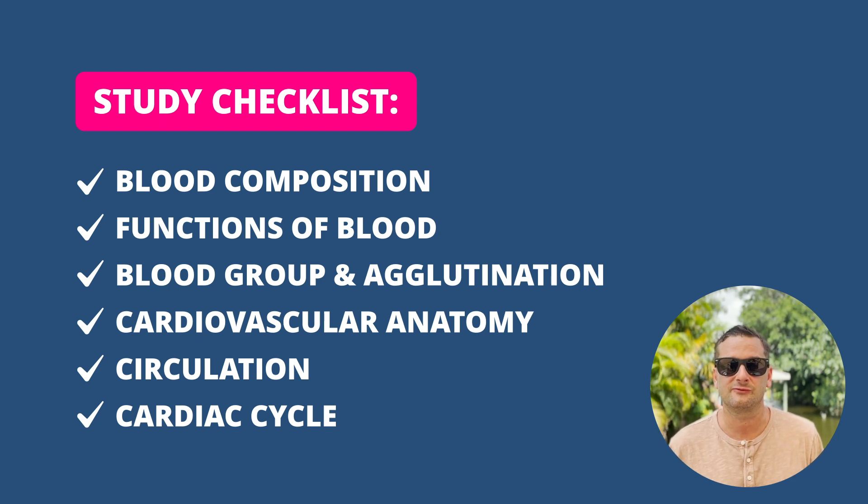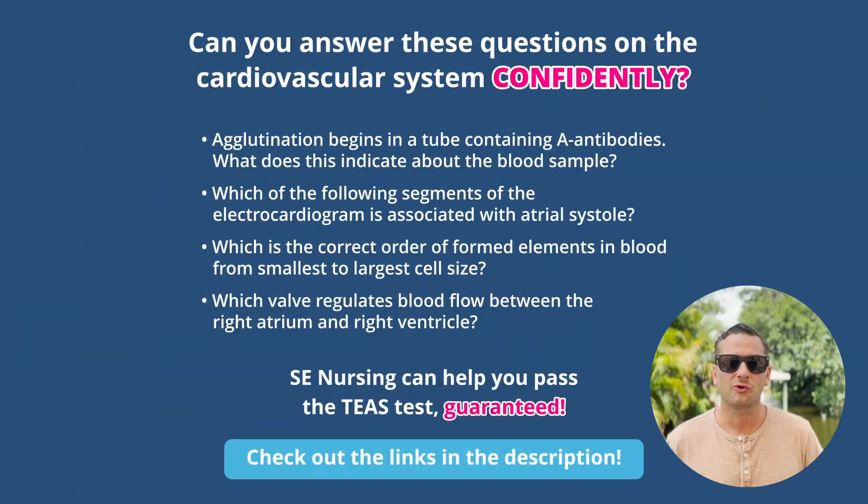Core things you need to know related to the cardiovascular system include: what blood is, what elements blood is made of and its functions, the four common blood groups and the differences between them, how blood circulates through the heart, the anatomy of the heart, deoxygenated and oxygenated blood, the cardiac system, and what an EKG is and how to read one.